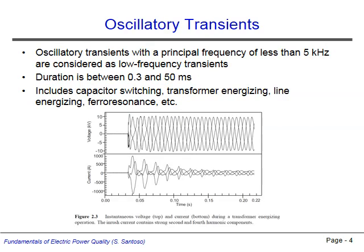Oscillatory transients are grouped by their principal frequency. If this frequency is less than 5 kHz, the transient is considered to be low frequency. Low frequency transients typically last between 0.3 and 50 ms and can be caused by phenomena such as capacitor switching, transformer energizing, line energizing, or ferroresonance. Shown in the figure is a low frequency transient caused by the energizing of a transformer occurring at about 35 ms.